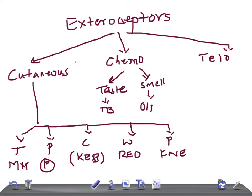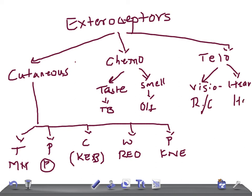In the teloreceptors, we have two subtypes: one is for vision and the second is for hearing. For vision we have rods and cones, whereas for hearing we have hair cells.